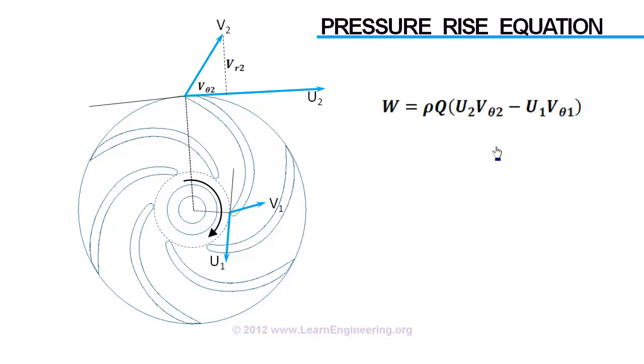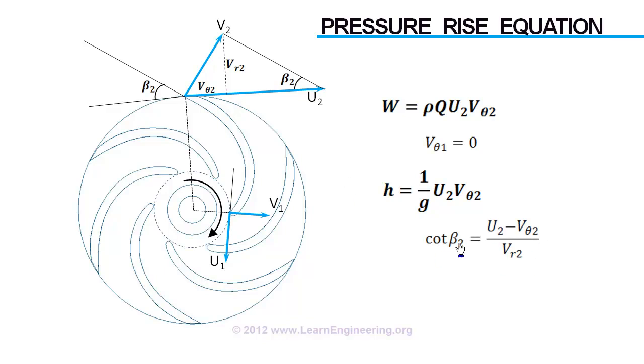For a centrifugal pump, inlet velocity will be parallel to radius, so tangential component at inlet is zero. From here we can find what's the head rise in meters of fluid. Outlet blade angle beta can be derived in terms of velocities. Also flow rate through impeller is given as flow area times radial velocity. So head rise in a centrifugal pump can be derived in terms of flow rate.